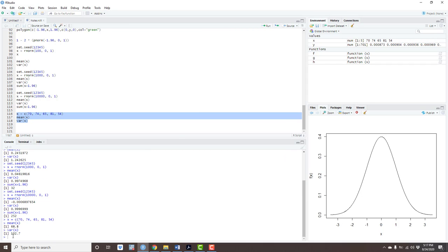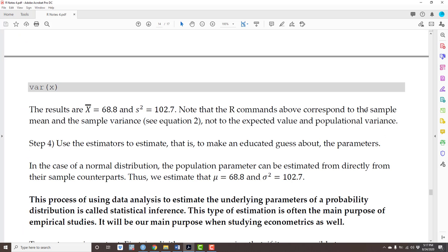Okay, 68.8, 102.7. Note that the R commands above correspond to the sample mean and sample variance, meaning the estimators, not to the expected value and population variance, which are the parameters.